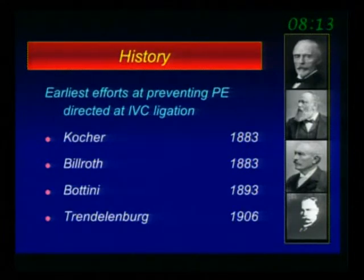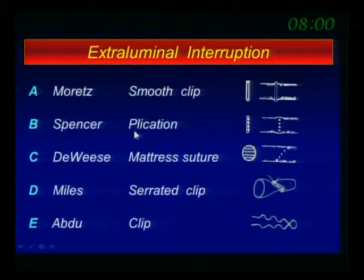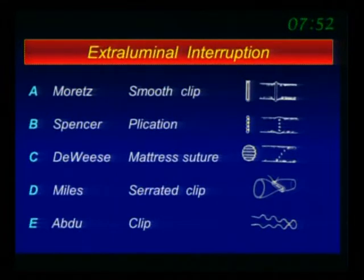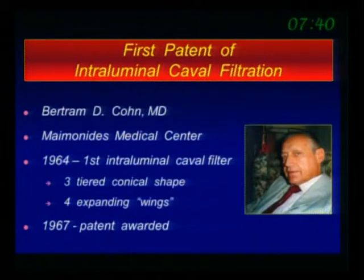A little bit of history, and I have some interesting slides to show you. Since people in the late 1800s found out that PEs were coming from the lower extremities, they said, let's ligate the vena cava. But vena cava ligation has a lot of complications. So the next step was to do something minimally invasive, like putting a clip around it to allow flow but prevent large clots from reaching the heart. There were many types — the smooth clip, the plication, the mattress sutures — but all those led to thrombosis of the vena cava anyway.